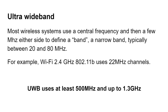Most wireless systems use a central frequency with just a few megahertz either side — a narrow band of typically 20 to 160 megahertz. For example, the original Wi-Fi 802.11b uses a 22 megahertz channel around 2.4GHz. Ultra wideband, however, uses a minimum of 500 megahertz and can go up to 1.3GHz wide. So you could pick 3.1GHz and go all the way up to 3.6GHz and transmit all your pulses across that entire section — a huge advantage.